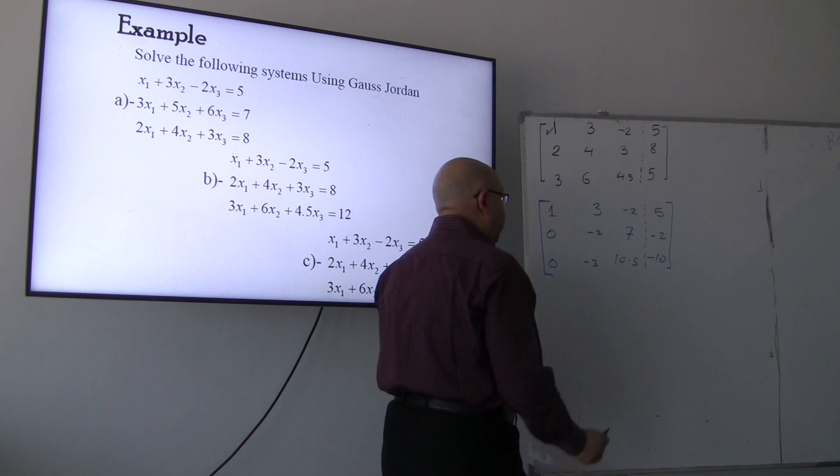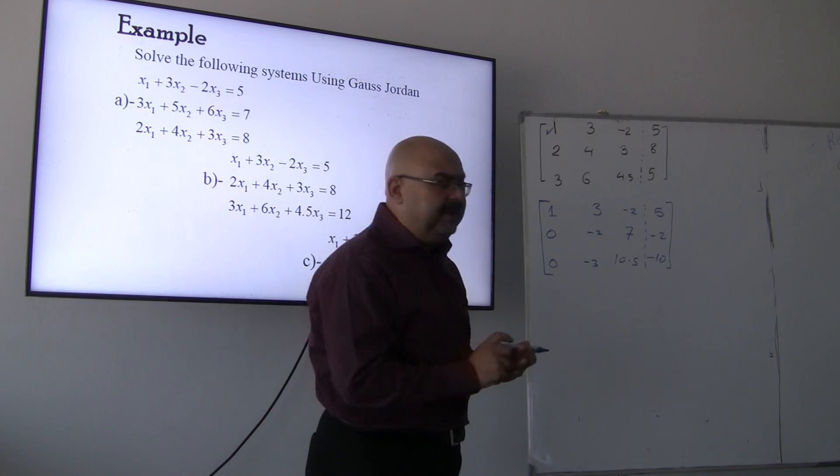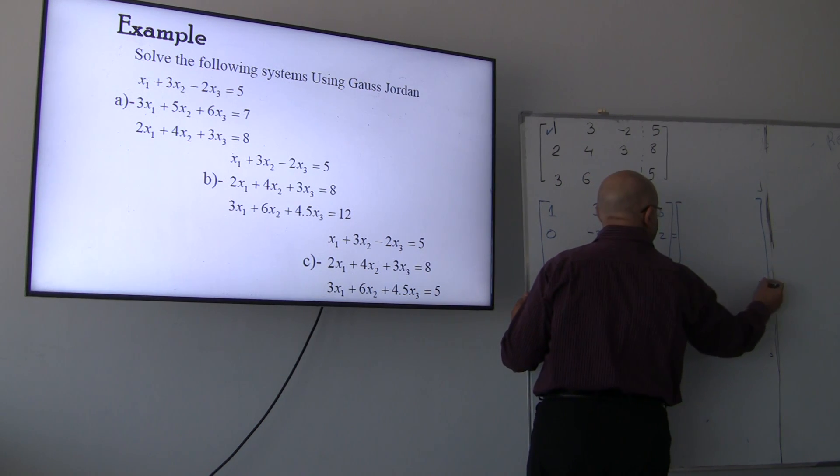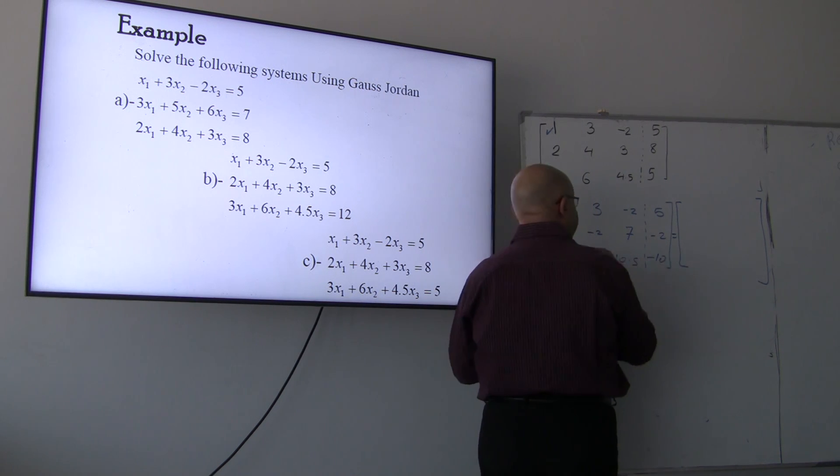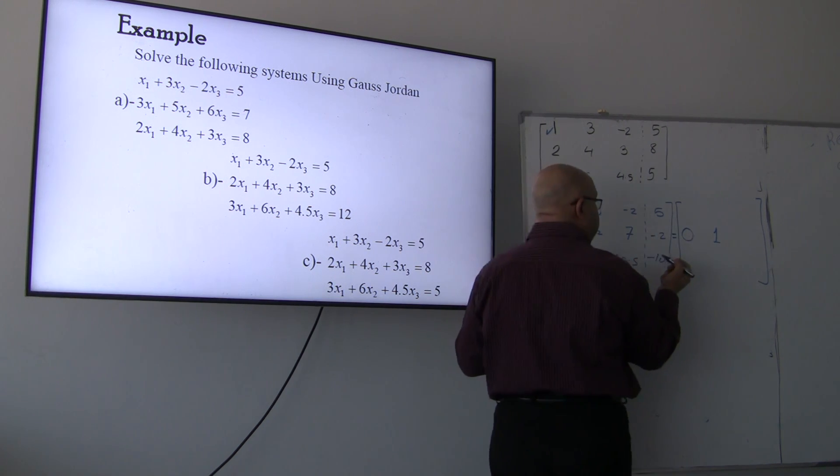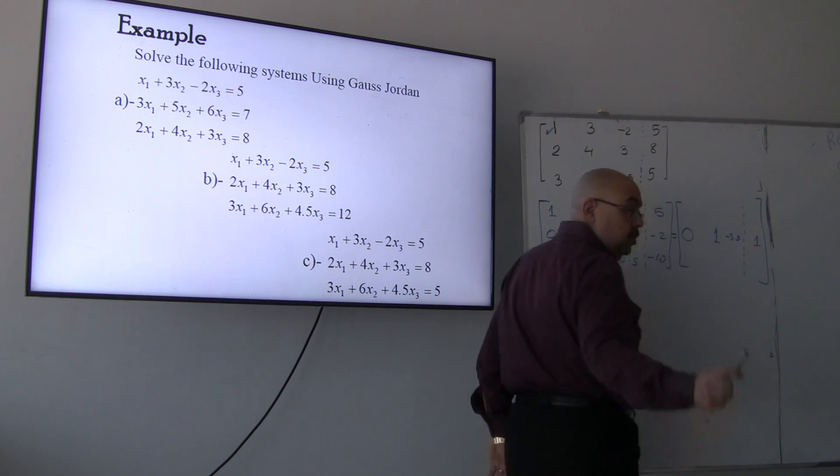The second step, I will need negative 2 to equal 1. I'm not going to do it like the previous one. So I'm going to just divide the second row by negative 2 for simplicity. So dividing by negative 2, it will be 0, then 1. 7 on negative 2, it's going to be negative 3.5. Negative 2 on negative 2 is going to be positive 1.